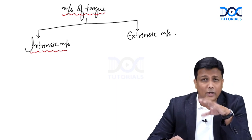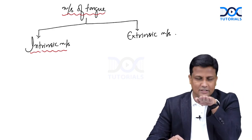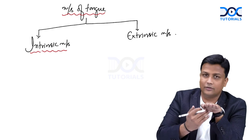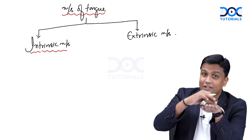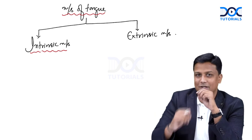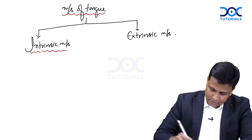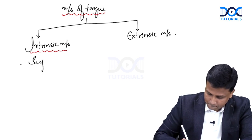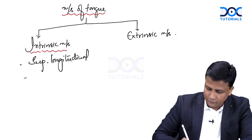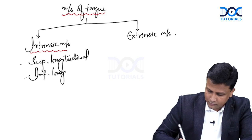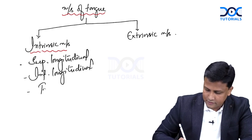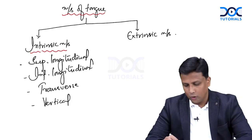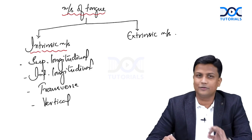Intrinsic muscles of the tongue can be learned very easily just with the help of direction. Suppose this is the tongue — there are muscles inside the tongue which are longitudinally placed: superior longitudinal and inferior longitudinal. We also have the transverse muscle and the vertical muscle. So just remember all the directions and that will be done.